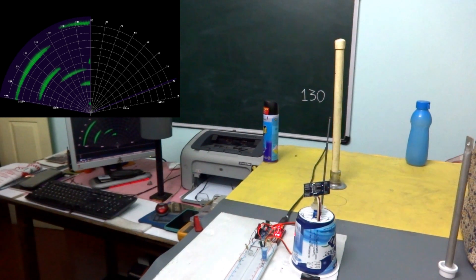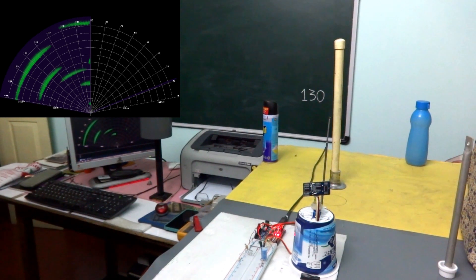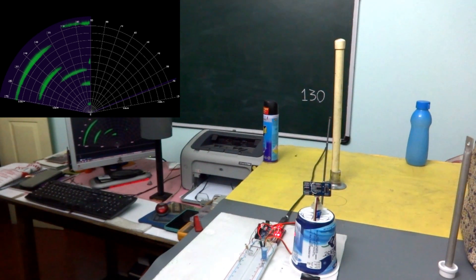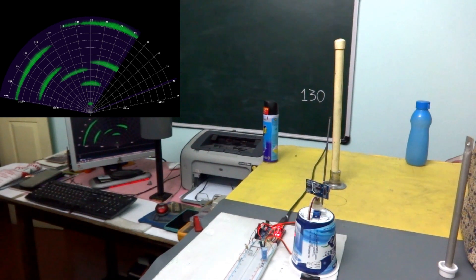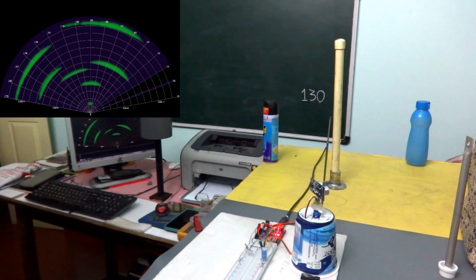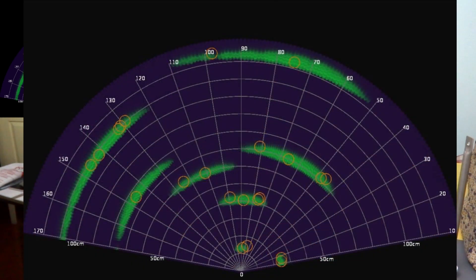The radar starts scanning from zero and proceeds till minus 80. The scan from minus 80 to plus 80 is used to compute the probable target locations and these are highlighted as small circular rings by the software, as you can see here.